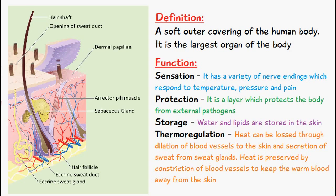Another function is thermal regulation, so heat can be lost through the dilation of blood vessels to the skin and secretion of sweat from sweat glands, and heat can be preserved by the constriction of blood vessels to keep the warm blood away from the skin.